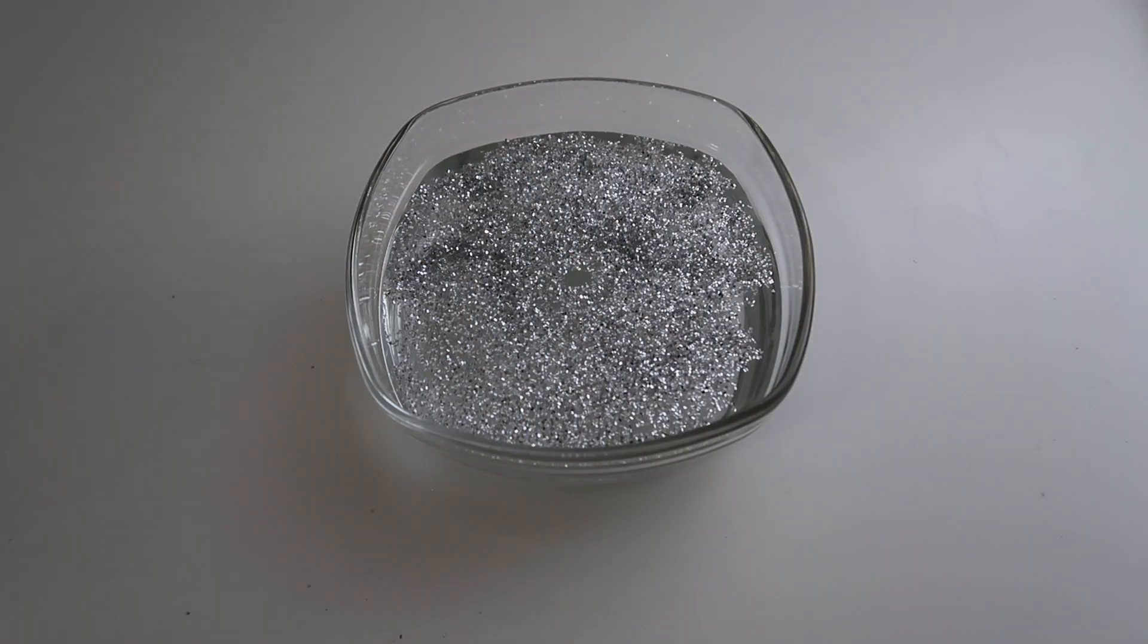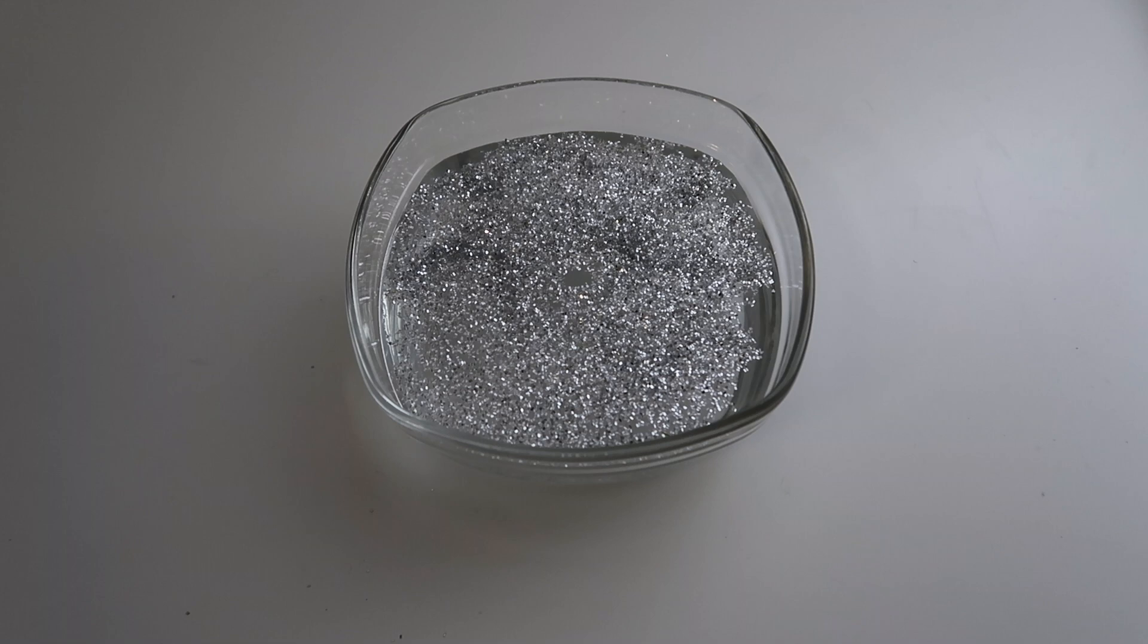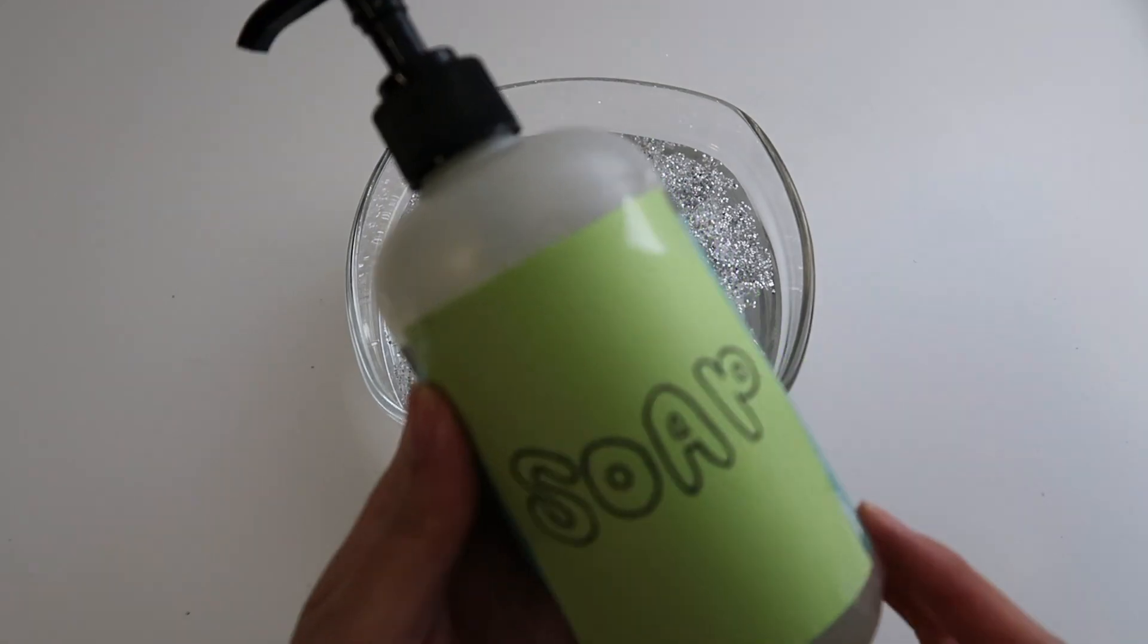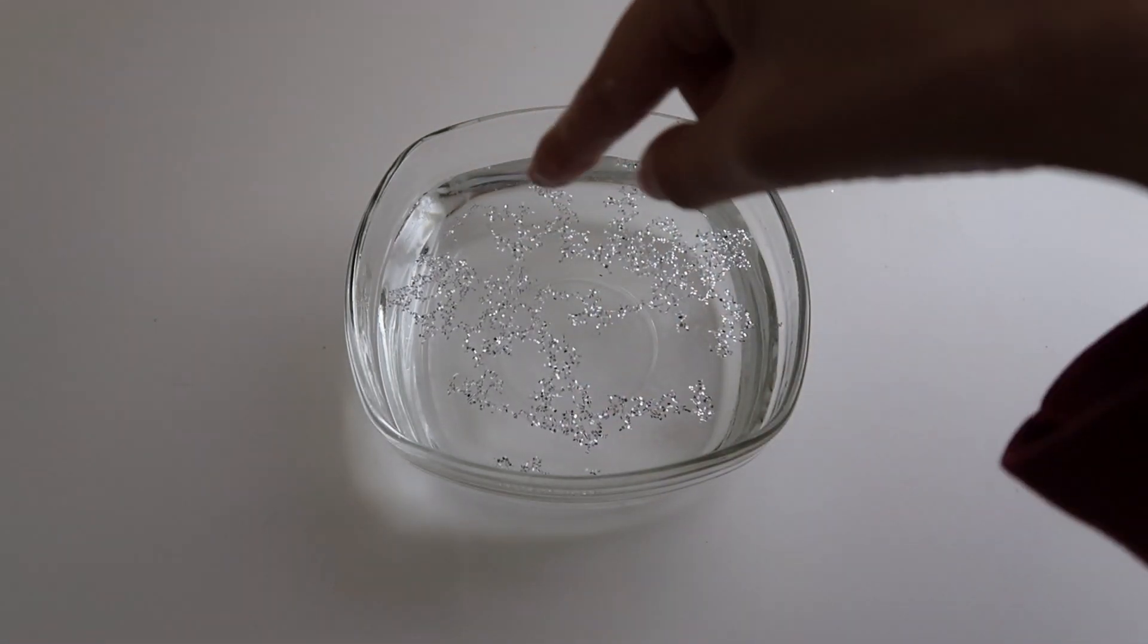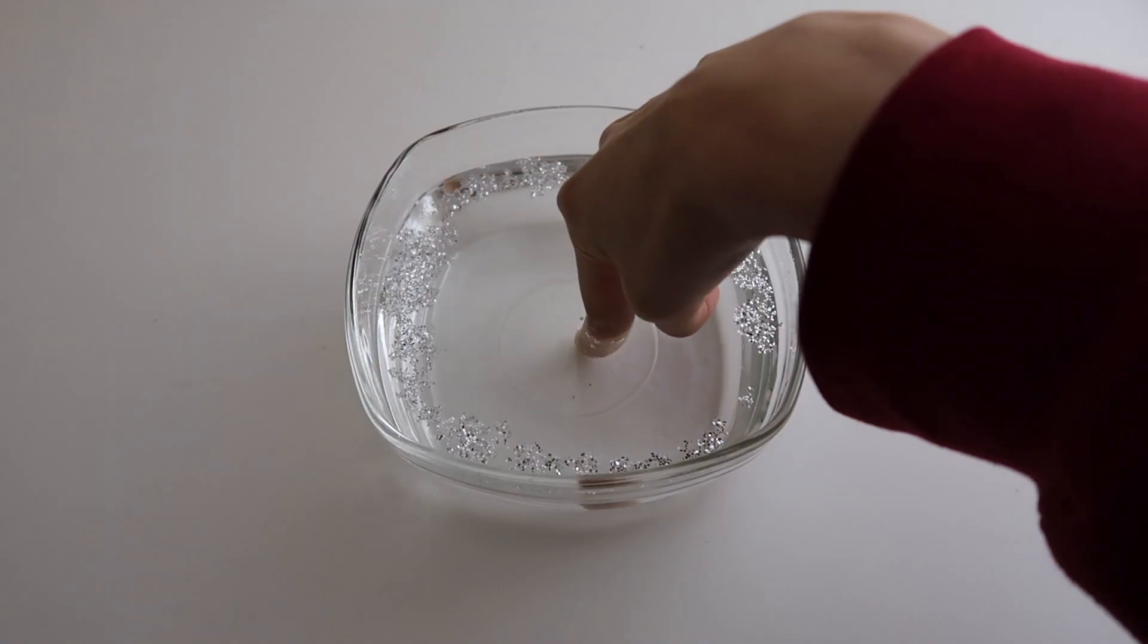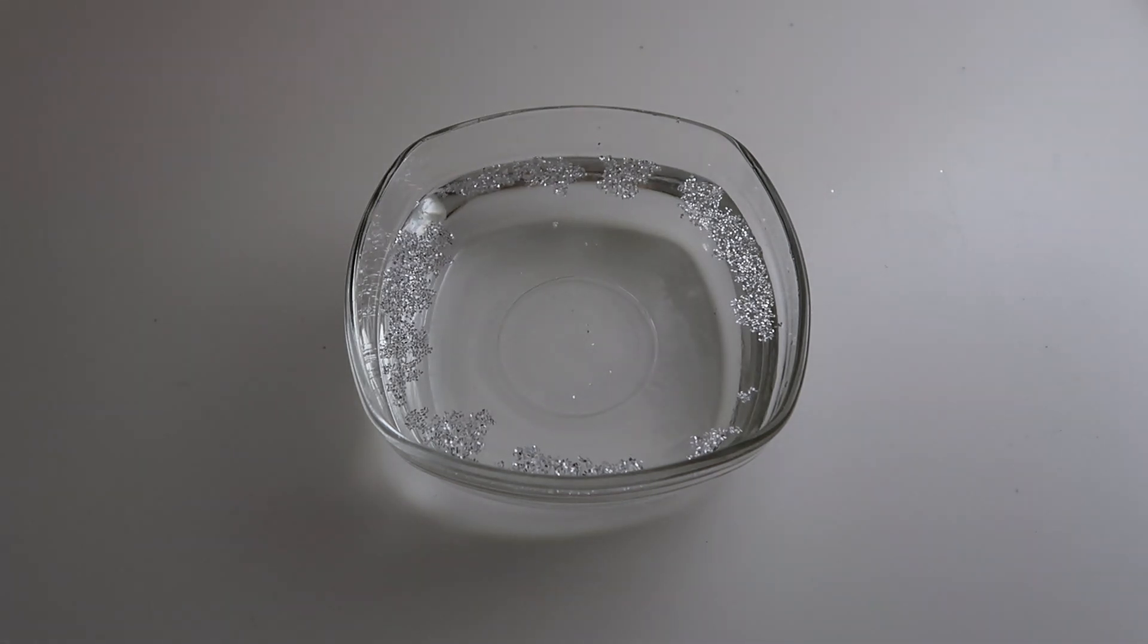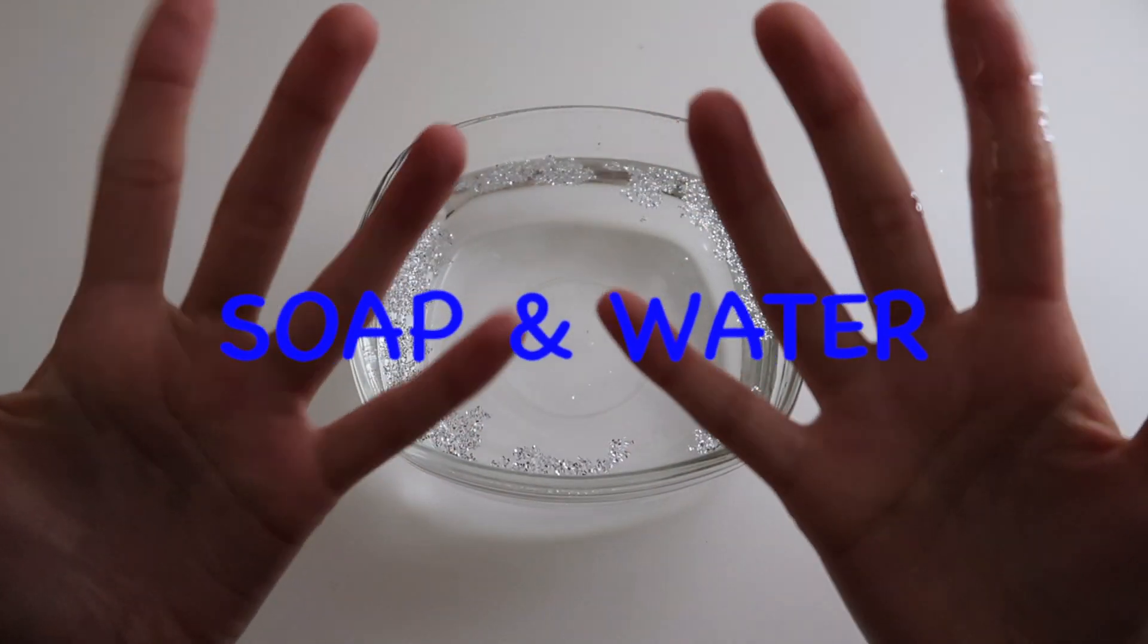And now we're going to use something else we should be using when we wash our hands. Can you guys guess what it is? That's right! Some soap! Okay, so I put some soap on my finger. And now let's see what happens to the germs when I stick my finger in the middle of the water. Whoa! See what happens when you wash your hands with soap and water? The germs don't like it and move away. That was so cool. So make sure you wash your hands with soap and water so those icky germs won't get all over your hands.